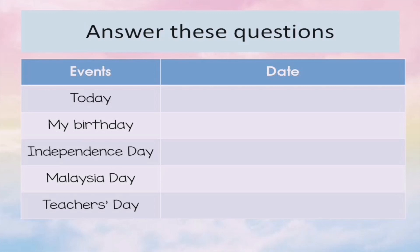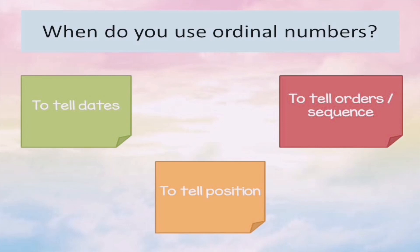You have to answer the remaining questions on your own — copy them into your notebook and fill in the dates. To sum it up: there are three situations where you use ordinal numbers. First, for dates. Second, for position — for example, which floor or which position in a race. Third, to tell orders or sequence — for example, steps in a recipe or directions. That's all for today. I hope you learned a lot. Until next time, bye bye!